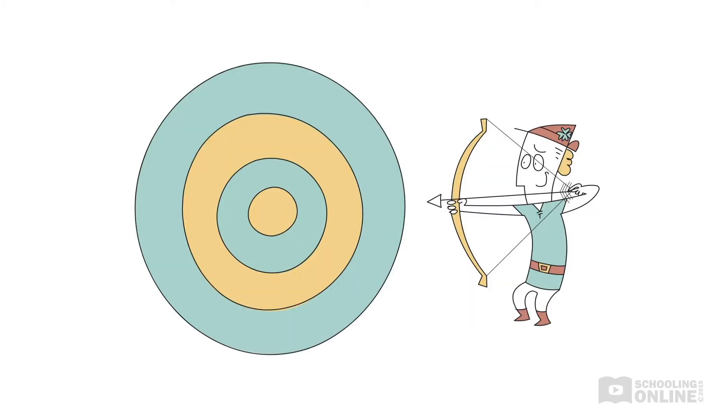On the other hand, Fluky Luke demonstrates a very large random error. His arrows might hit above, below or to the side of the target. He might hit close to the bullseye or he might miss. Fluky Luke is so unpredictable that he cannot shoot consistently, so he is not a reliable archer.